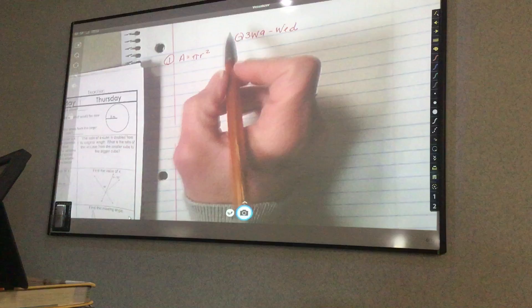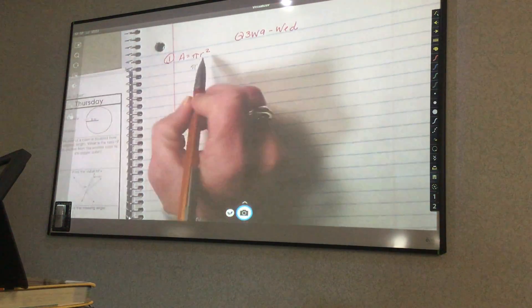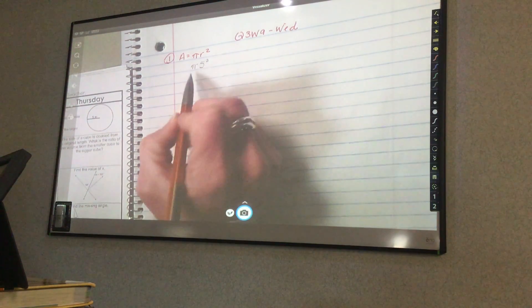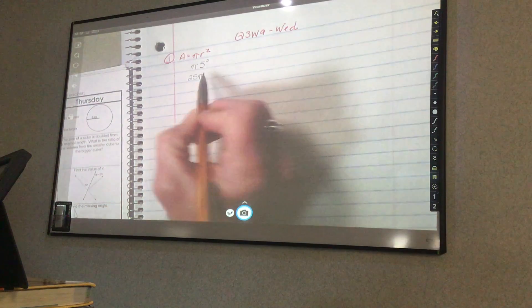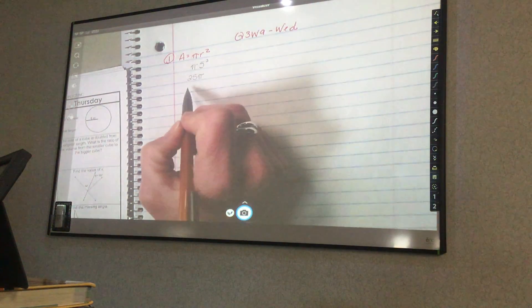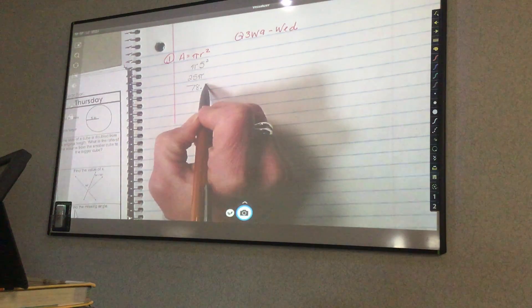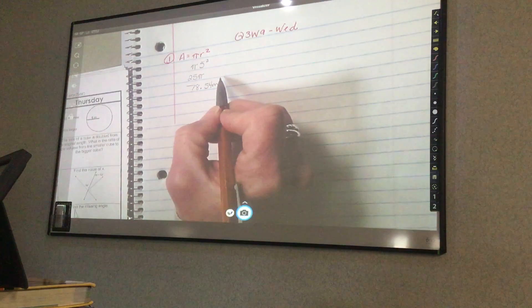So pi times my radius is already given, which is 5 squared. So 5 squared is 25, and you would say 25 times pi. Sometimes they leave it at pi, but we're just going to get used to finishing it all the way. So we have 78.54 meters squared.